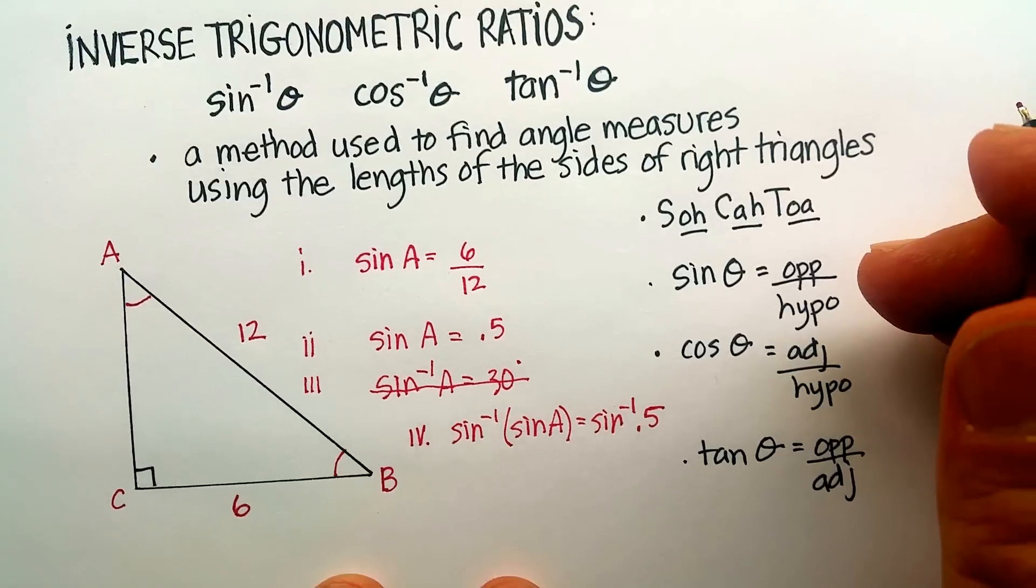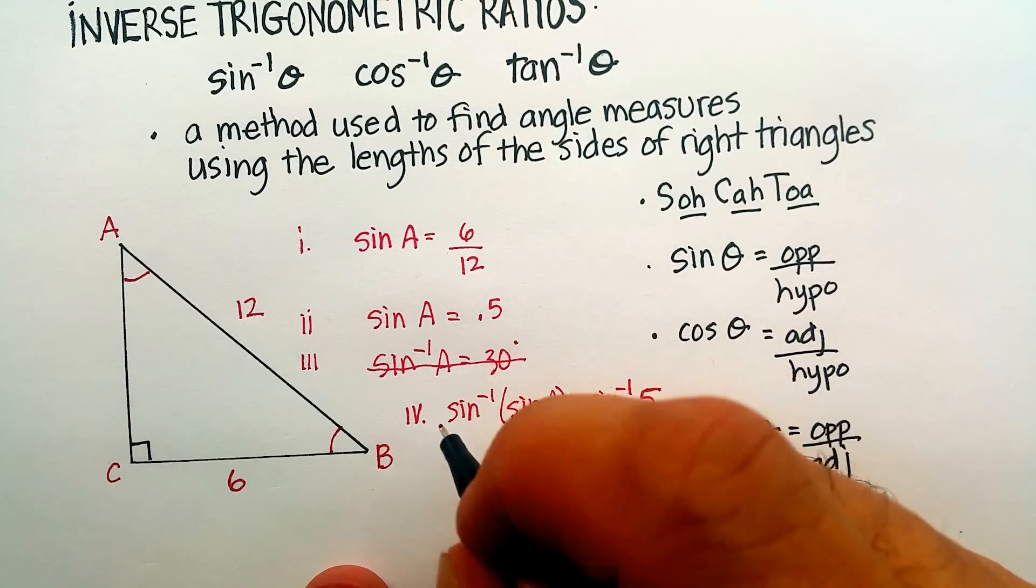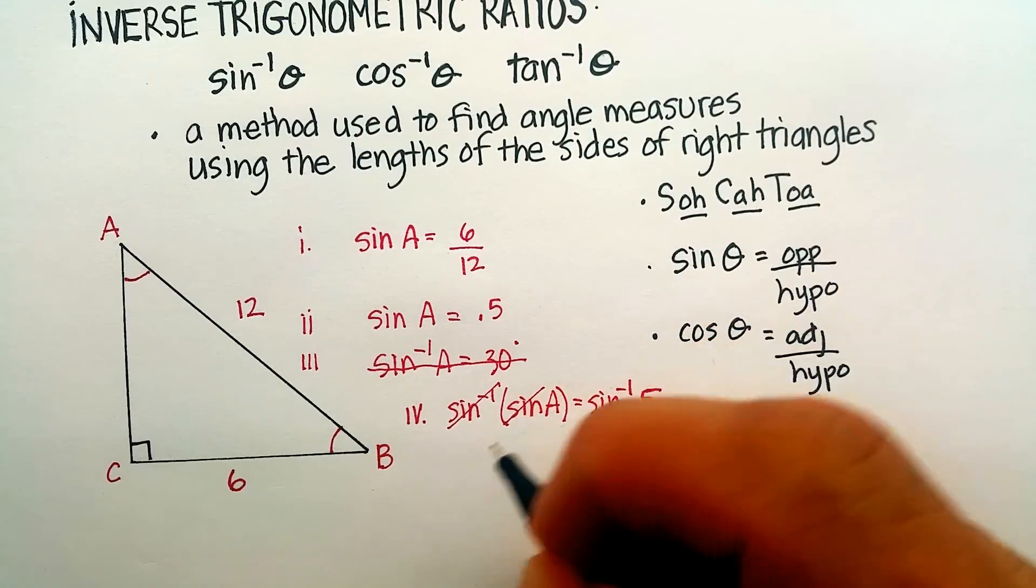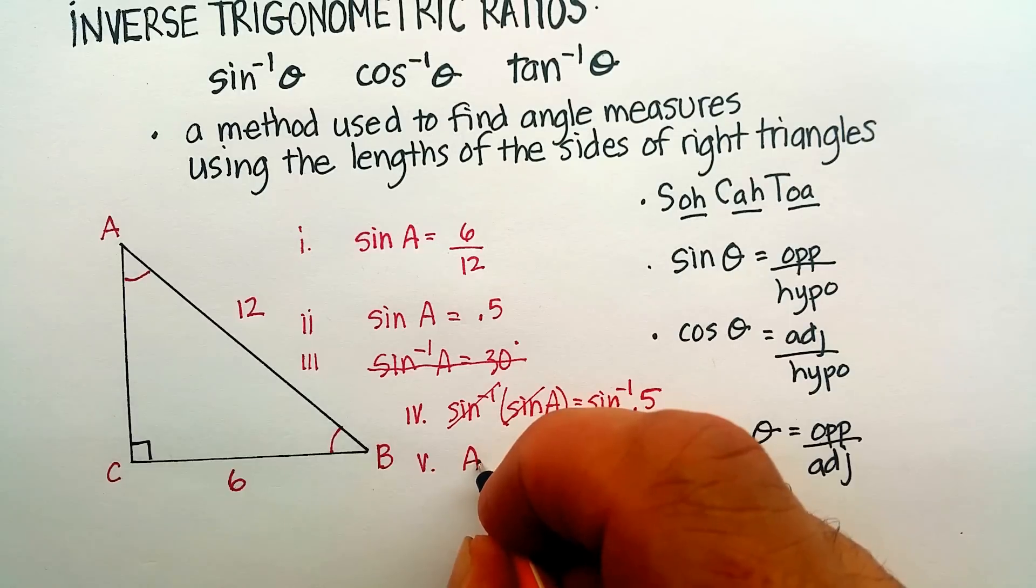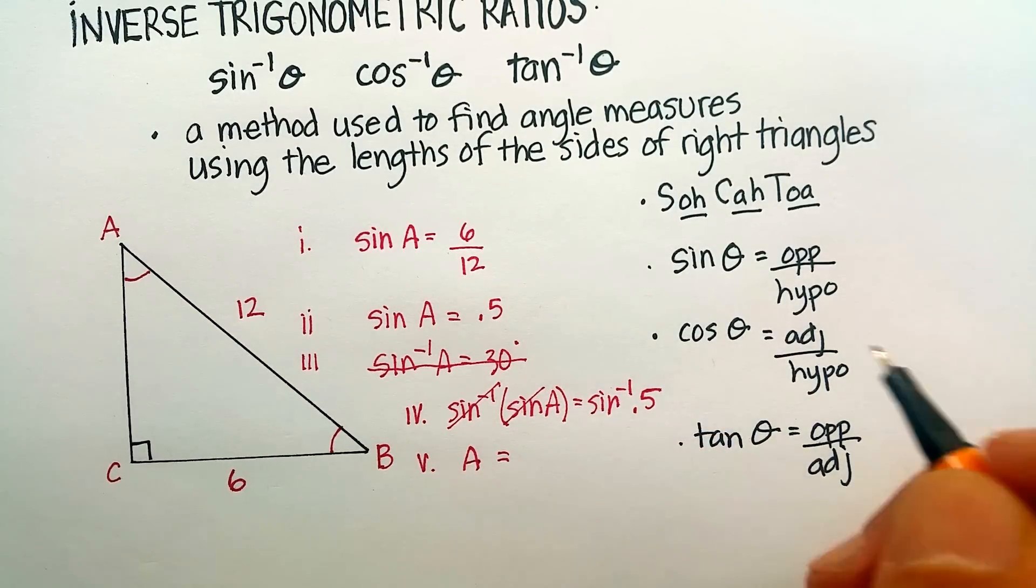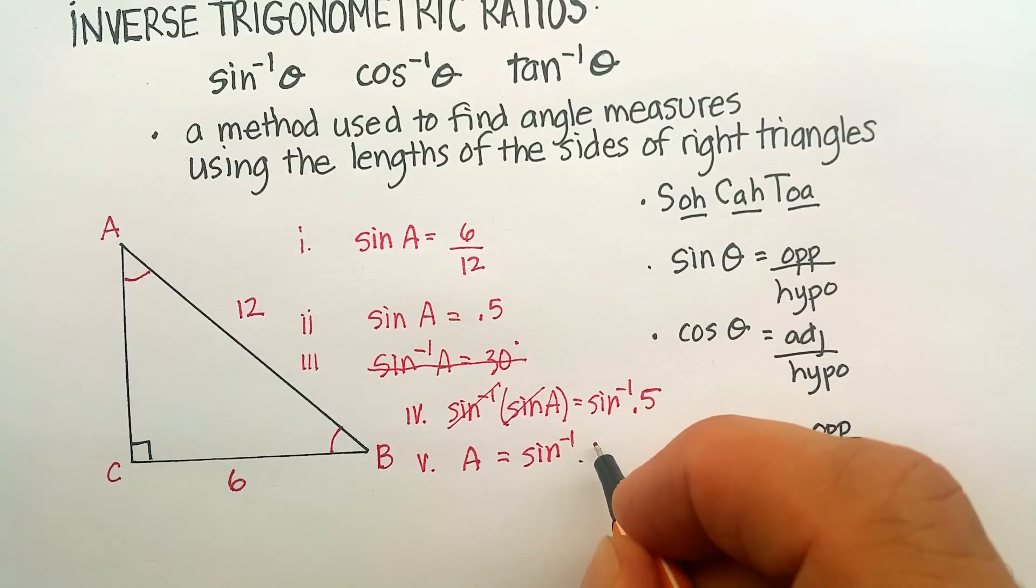I'm going to say inverse sine times sine A will be equal to the inverse sine times 0.5. Now, algebraically, what this does is that this inverse cancels out the sine. So, the inverse sine cancels out the sine, and I'm left with, more accurately, angle A would be equal to the inverse sine of 0.5.